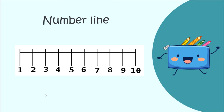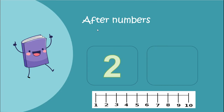So we're going to look at some numbers, and we're going to look at after numbers first. After numbers are the number that comes behind the number we're looking at. So we're going to look at 2 — let's find 2 on the number line. Here's 2. What number comes after 2? The number that's behind 2 — that would be the number 3. So 3 comes after 2.